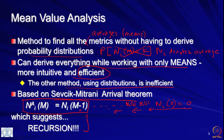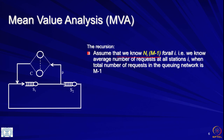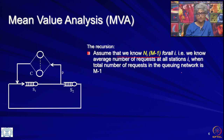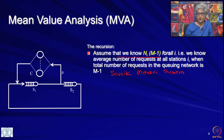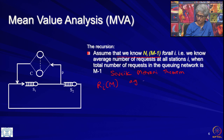The base case is quite easy: n_i(0), when there is nothing in the network, the average number of customers at each node is 0. Now let us assume that we know n_i(M-1) for all i — meaning I know the average number of requests at all stations i when the total number of requests in the queuing network is M-1. Using the Sevchik-Mitrani theorem, this gives us a major hint to write R_i(M), the average response time at node i when the load level is M.